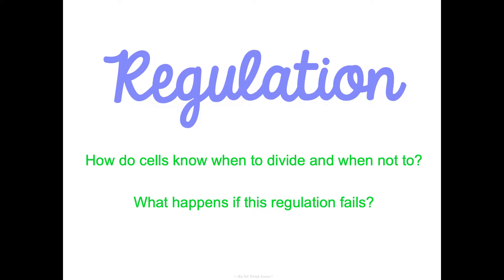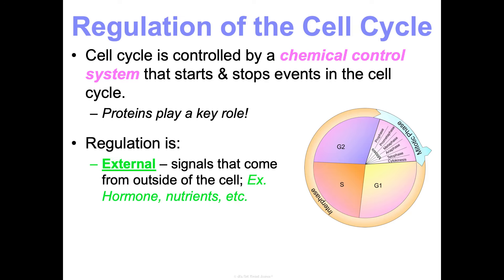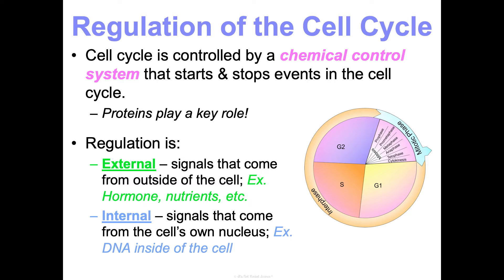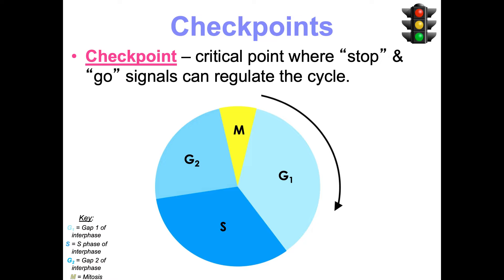How do your cells know when to divide and when not to? It's highly regulated by a chemical control system that starts and stops events throughout the cell cycle, with proteins playing an essential role. Regulation is both external and internal — signals from hormones and nutrients outside the cell, and signals from the cell's own nucleus and DNA. One key point in this are checkpoints — critical stop-and-go signals that regulate the cell cycle, like a red-light-green-light game.